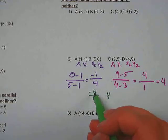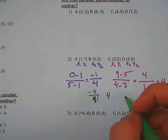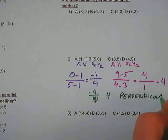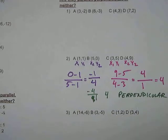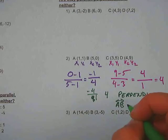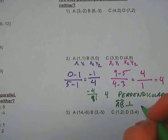So when we flip the fraction and change the sign, we get 4, which tells us that they are perpendicular. And we can also write this as line AB is perpendicular with the perpendicular sign to CD.